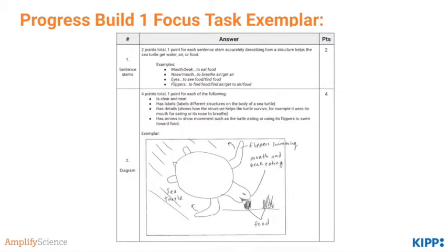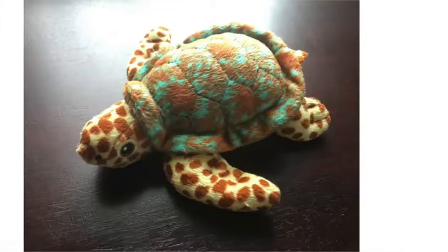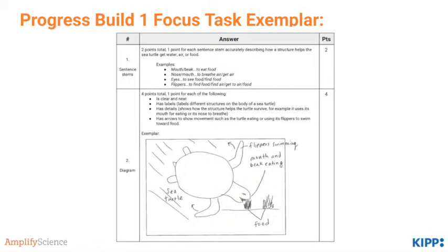Great. Here are our answers and exemplar for the task. Go ahead and check it on the scoring guide at the back of the assessment and see how you did. In completing this, students should be able to demonstrate they understand that to survive, animals and plants must be able to get water, air, and food, and not be eaten by animals that try to eat them for food.